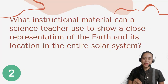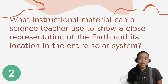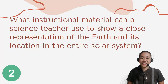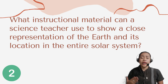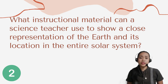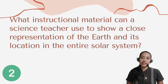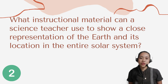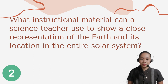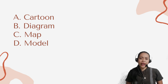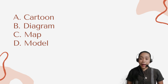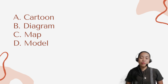Question number 2. What instructional material can a science teacher use to show a close representation of the Earth and its location in the entire solar system? Letter A: Cartoon. B: Diagram. C: Map. D: Model.